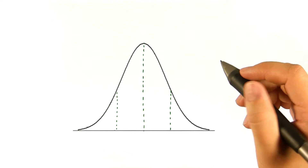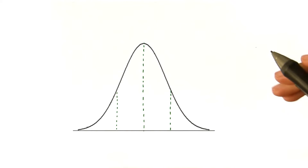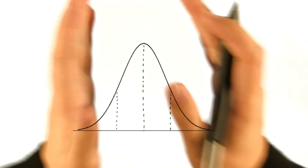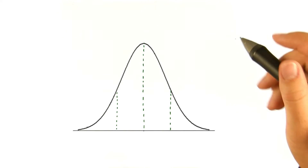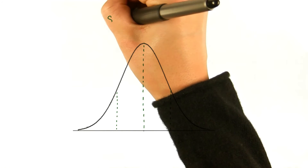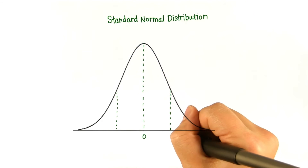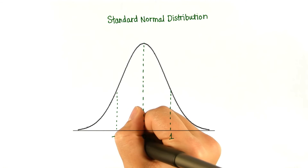Just to recap, when we have any normal distribution, we can standardize it by first subtracting the mean, shifting it to 0, and then dividing by the standard deviation, which makes the standard deviation 1. This is called the standard normal distribution, with mean 0 and standard deviation 1.